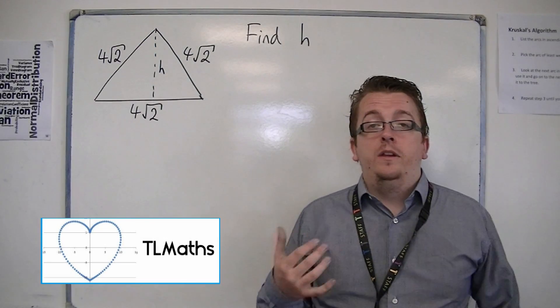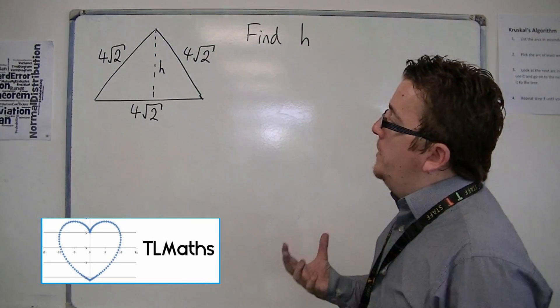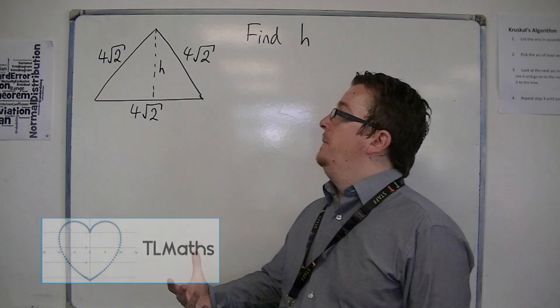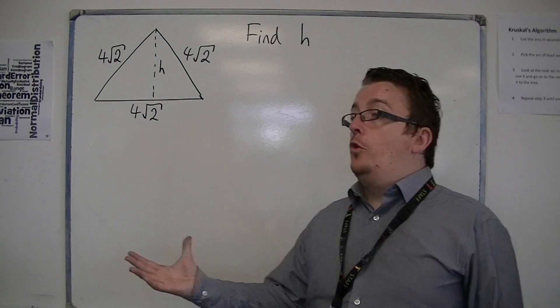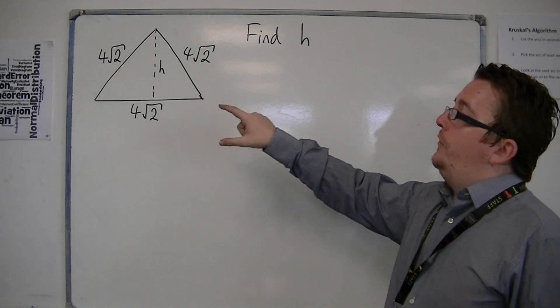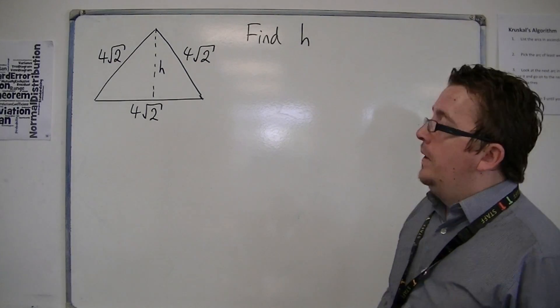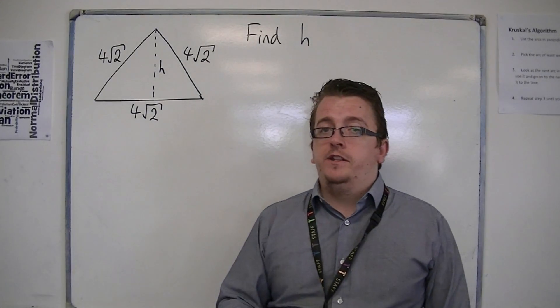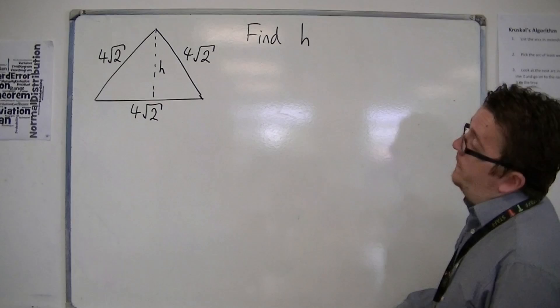So in this video we're going to look at another problem. This time we've got an equilateral triangle, as best I can draw one, and its sides are of length 4 root 2. And what we're asked to do is find the height of the triangle, find h in this case.